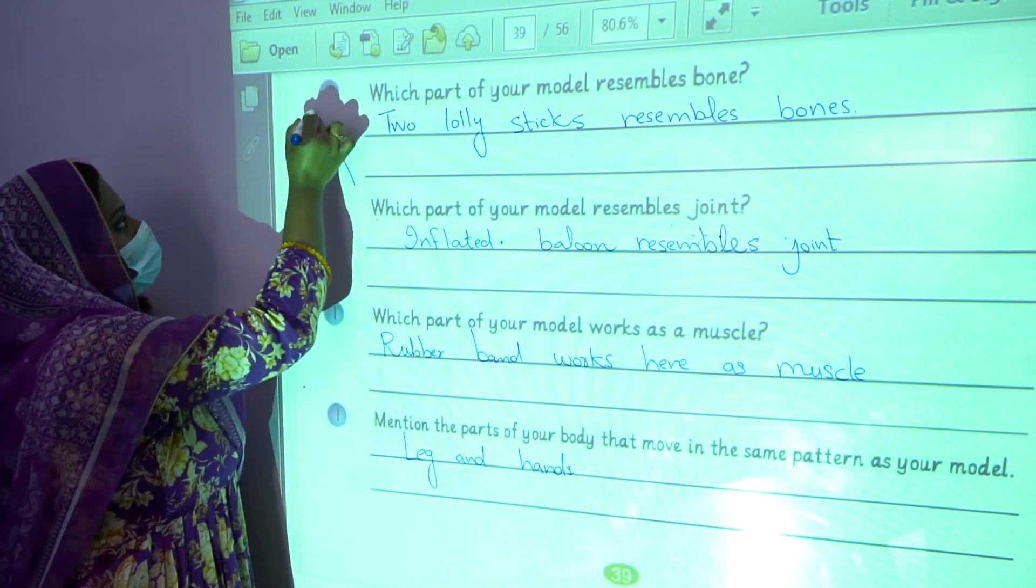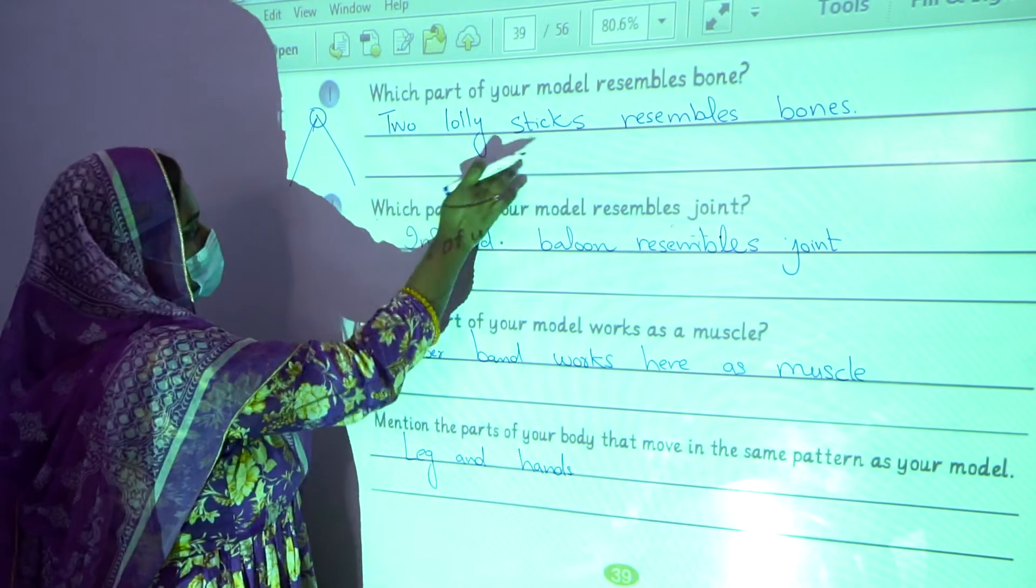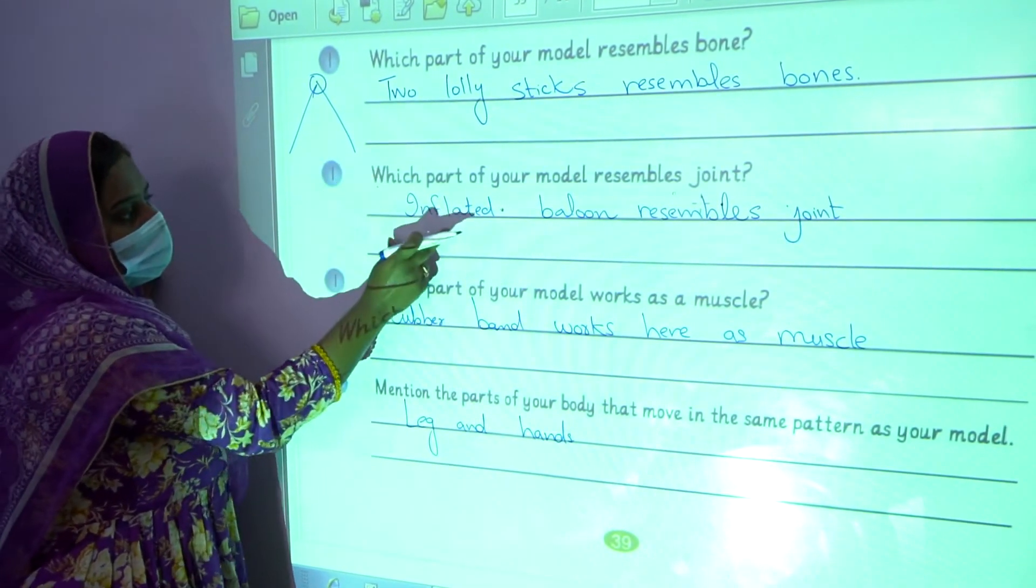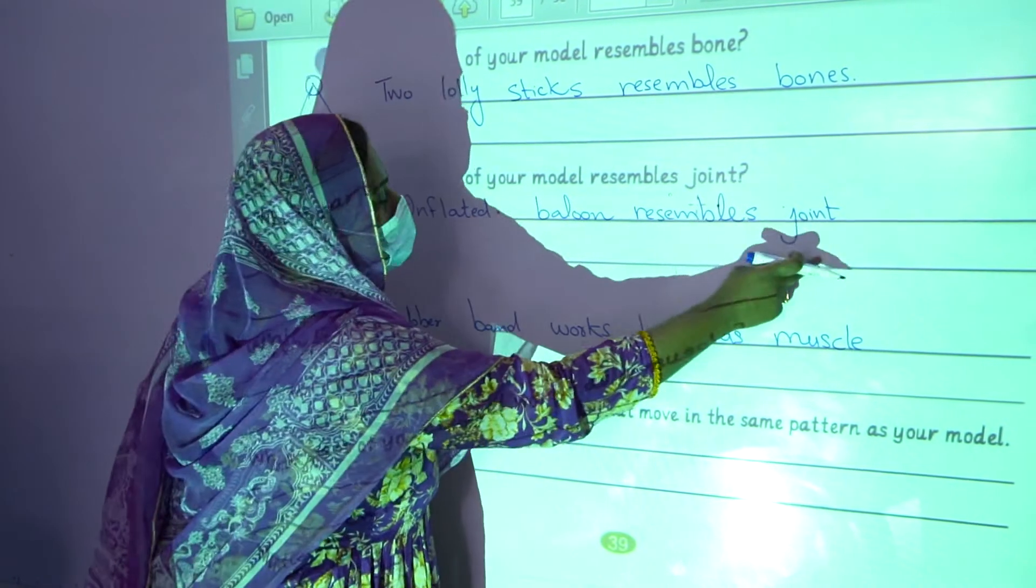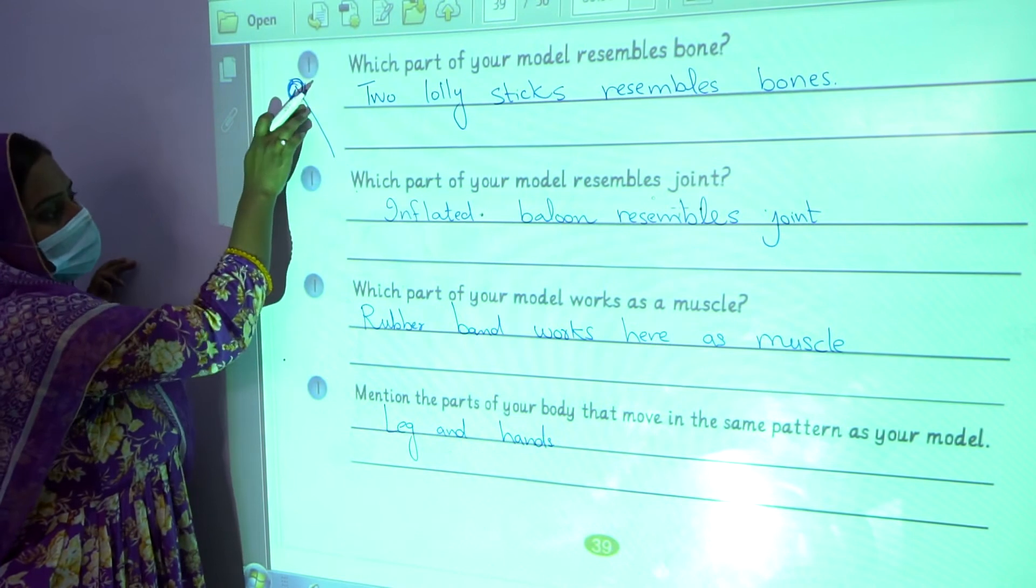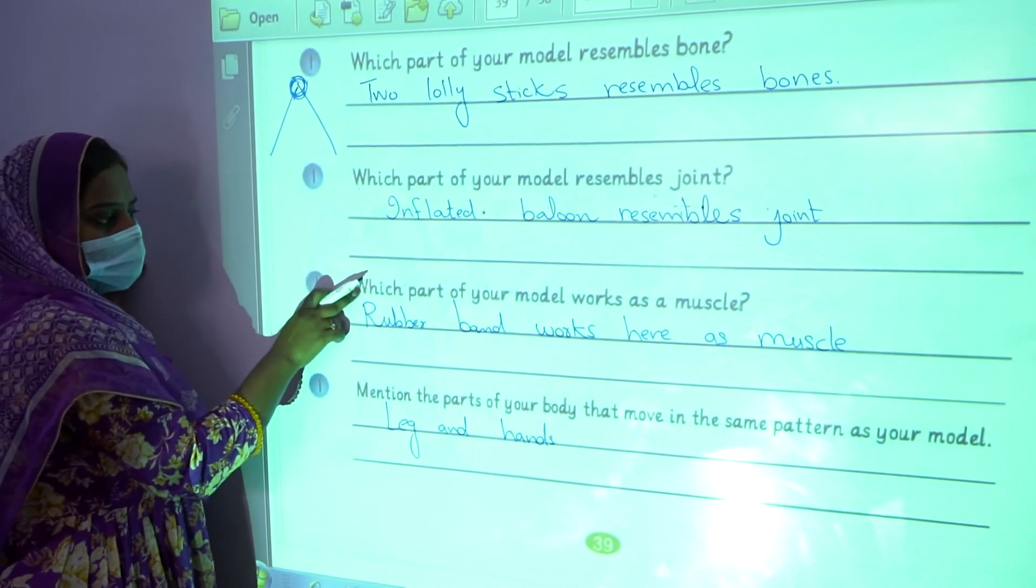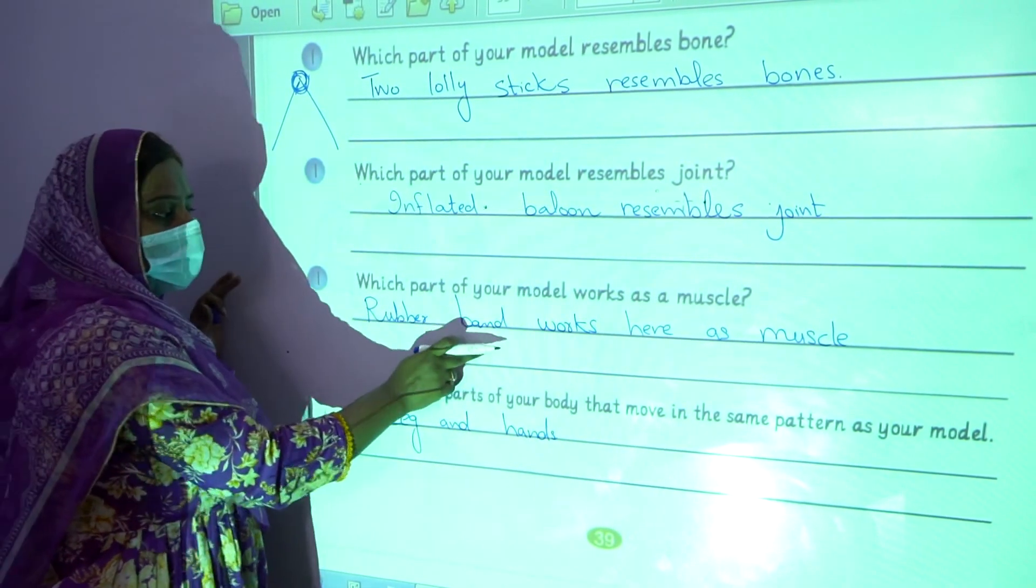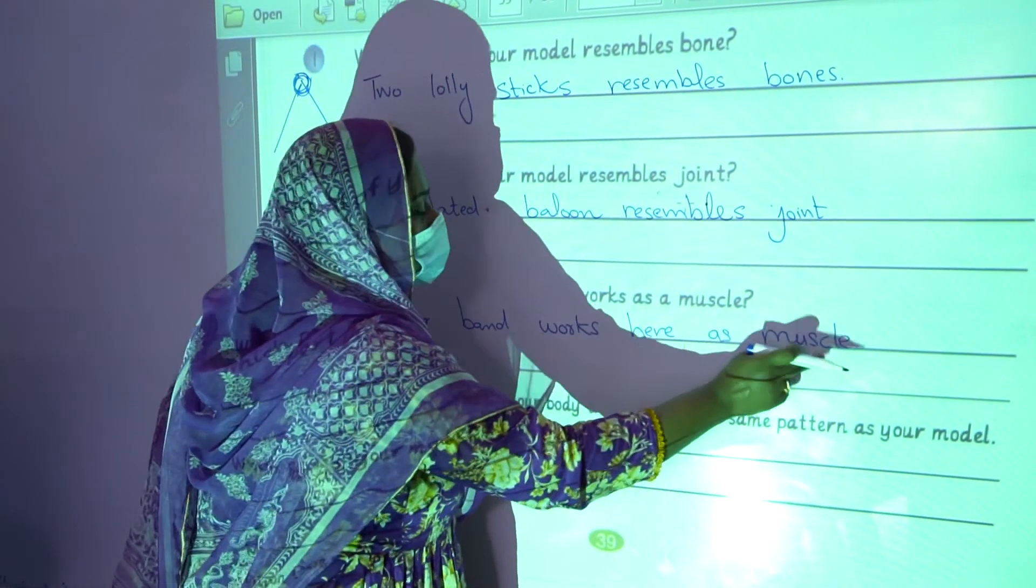Which part of your model resembles joint? Inflated balloon resembles joint. We attach inflated balloons at the upper side, so it resembles joint. Which part of your model works as a muscle? The rubber band works here as a muscle.